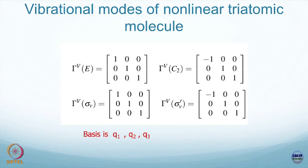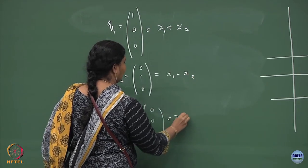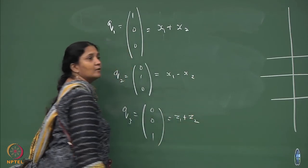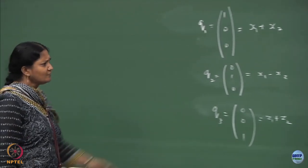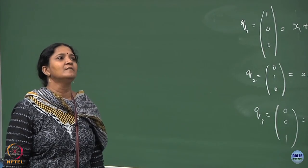Since we went through this long method, we know that q1 is one independent degree of freedom, q2 is another independent degree of freedom, and q3 is the third independent degree of freedom. q2 is actually x1 minus x2 and this is z1 plus z2. This was known from the long method.